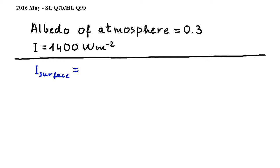So to calculate the intensity at the illuminated surface area of the earth we will multiply 0.7 by 1400. Since the albedo of the atmosphere is 0.3, 30 percent of the intensity that reaches the surface of the atmosphere is reflected back into space.